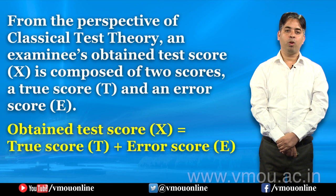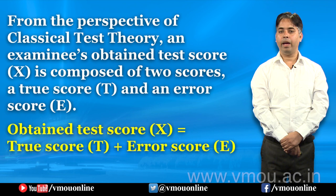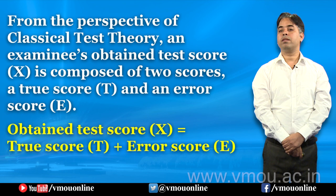सत्य प्रापतांक को हम T से इंगित करते हैं और error प्रापतांक को हम E से इंगित करते हैं। This is the formula that evolves: the obtained test score is equal to true score plus error score. That means, capital X is equal to T plus E.